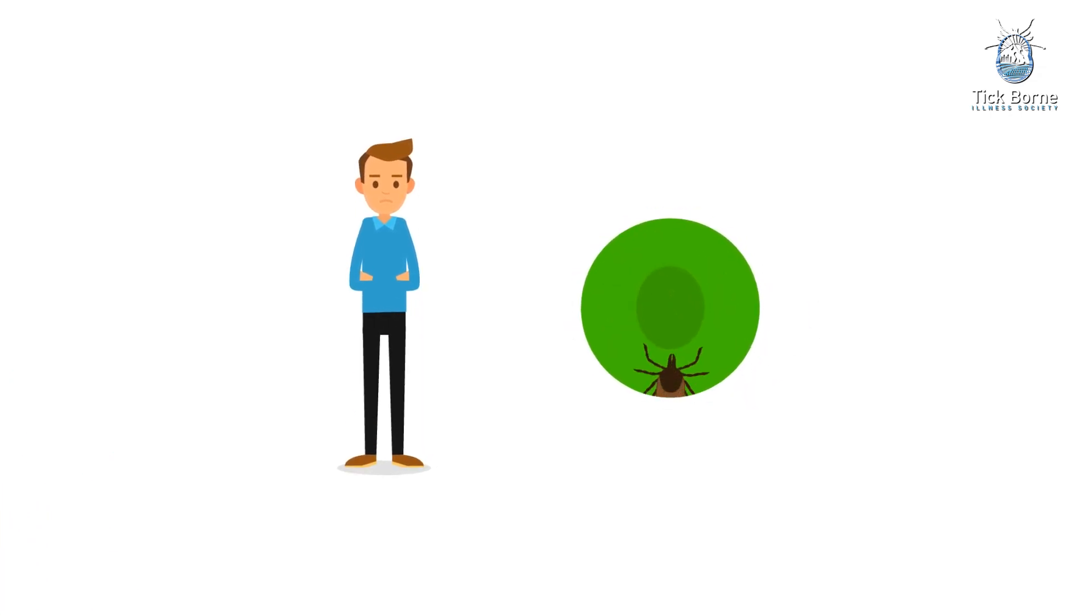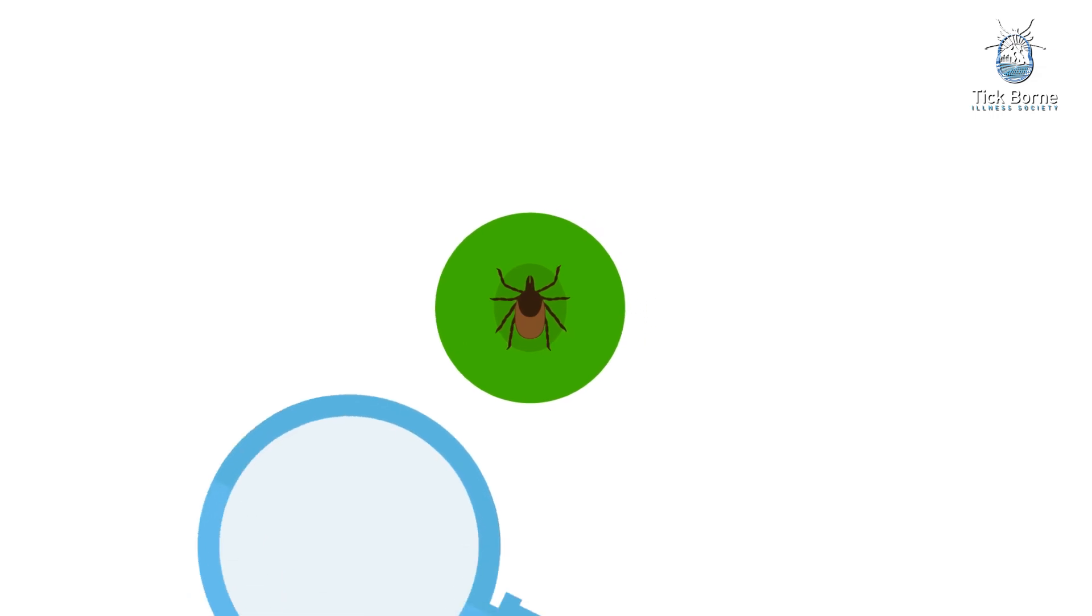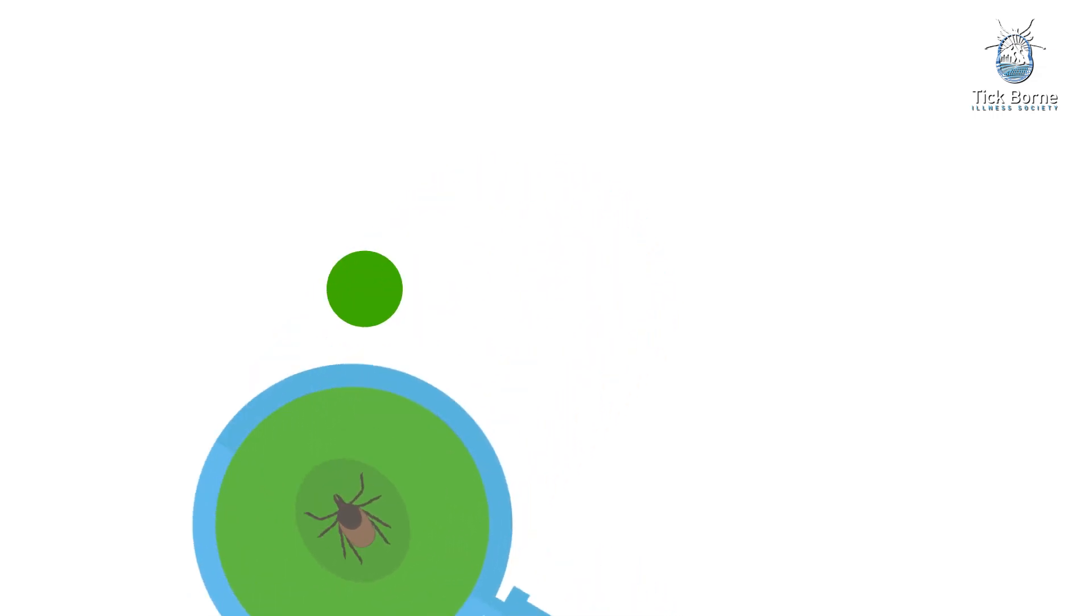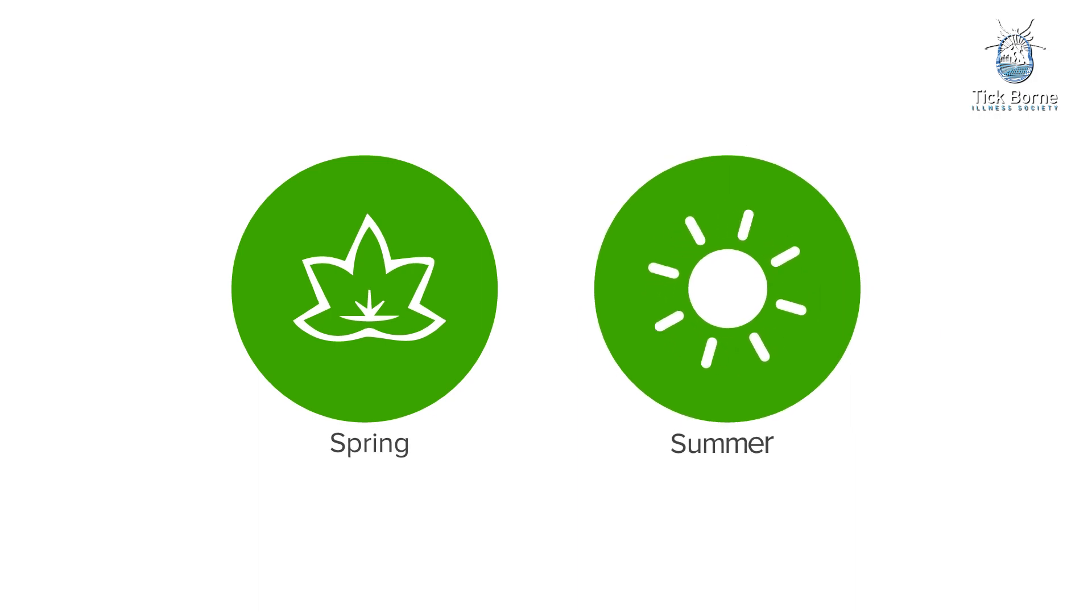Most humans are infected through the bites of immature ticks called nymphs. Nymphs are tiny, less than 2 millimeters, and difficult to see. They feed during the spring and summer months.